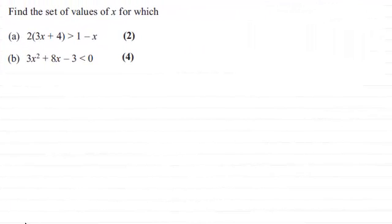Hi there. Now in this question we've got to find the set of values of x for which, first of all in part a, two lots of 3x plus 4 is greater than 1 minus x.